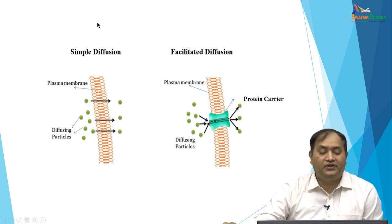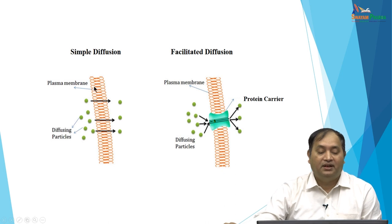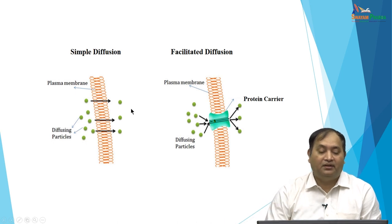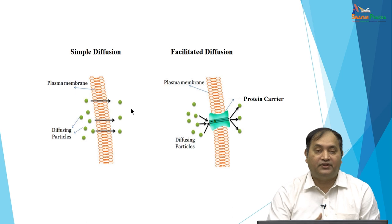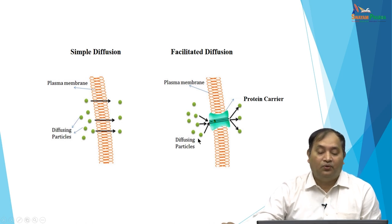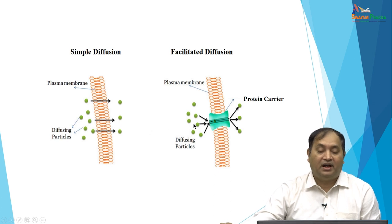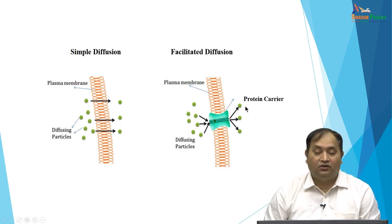To simplify: in simple diffusion, drug particles cross the lipid bilayer directly across the membrane. In facilitated diffusion, there are protein carriers present and the drug particle crosses the membrane with the help of a protein carrier. So simple diffusion uses the diffusion mechanism alone, while facilitated diffusion requires a protein carrier to cross the membrane.